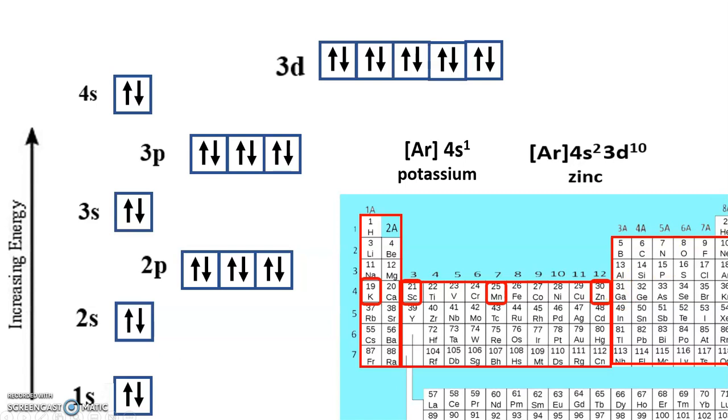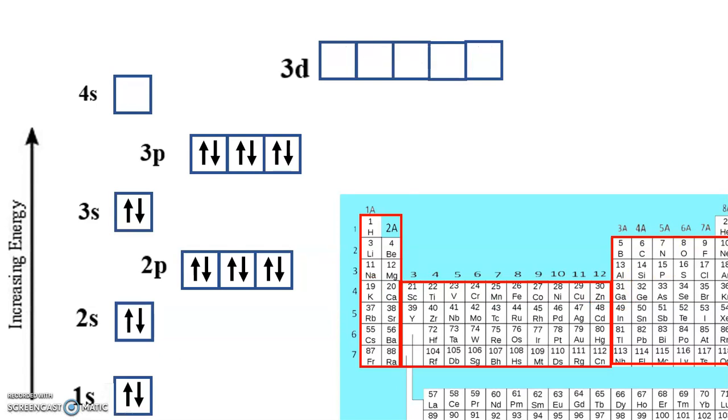So what we're going to do is go back through this, and then we will redo this, pointing out the ones that exhibit exceptions to some of the rules. So again, there's potassium, and then there's calcium, and then after that is scandium again. Scandium again is 3d¹. After that is titanium, vanadium again, and then finally we're back to chromium one more time.